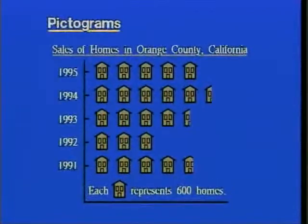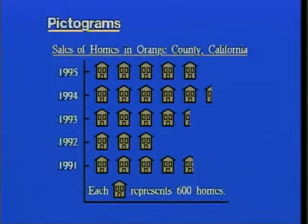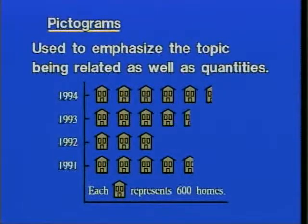Another kind of graph is the pictogram. Here we have a pictogram of sales of homes in Orange County, California from 1991 to 1995. At the bottom it indicates that each little picture of a house represents 600 homes — that's the nature of a pictogram. Pictograms are used to emphasize the topic being displayed as well as the quantities, giving a visual idea of the subject matter.